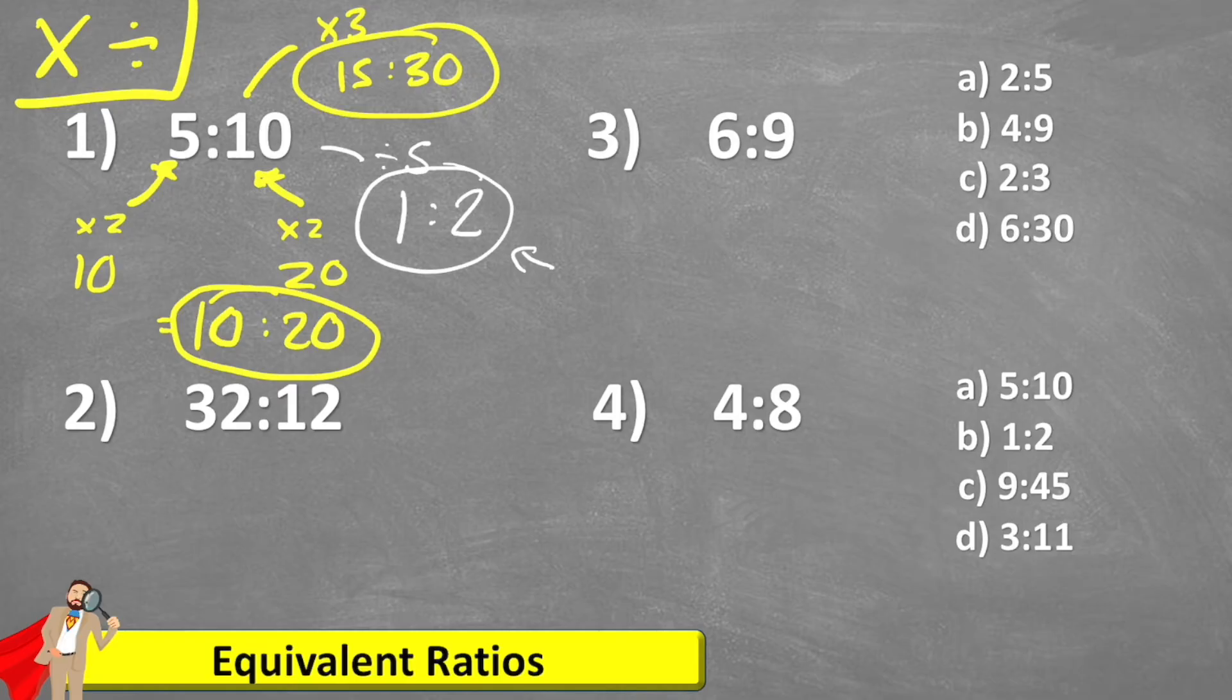Okay, let's have a look at question two. 32 to 12. So I could times it by two, and end up with 64 to 24. Or I could times it by 100, and end up with 3200 to 1200.